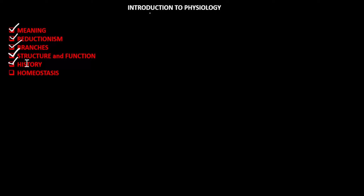As a recap of all we have done in this video: we saw the meaning of physiology, went through the concept of reductionism, took a look at the branches of physiology, saw how structure relates to function and by implication how anatomy relates to physiology, considered some historical figures in physiology, and briefly looked at homeostasis — the regulation of the internal environment of the body. In subsequent videos, we will discuss homeostasis explicitly.